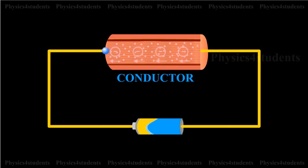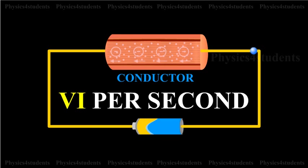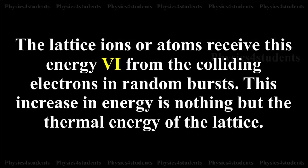Hence, the electrons gain energy at the rate of VI per second. The lattice ions or atoms receive this energy, VI, from the colliding electrons in random bursts. This increase in energy is nothing but the thermal energy of the lattice.